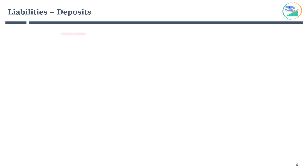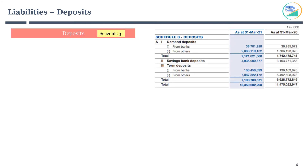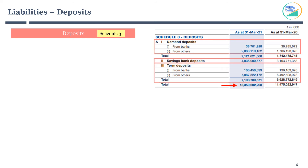Let's start with deposits. Reviewing Schedule 3 helps understand the bank's deposits in detail. On the balance sheet, deposits are classified as liabilities, and they are usually the largest liability. There are three types of deposits: demand deposits, savings bank deposits, and term deposits.